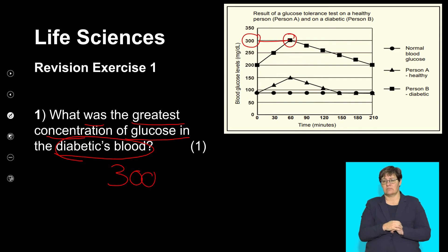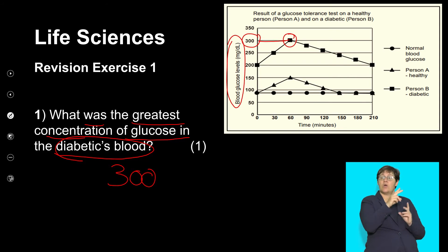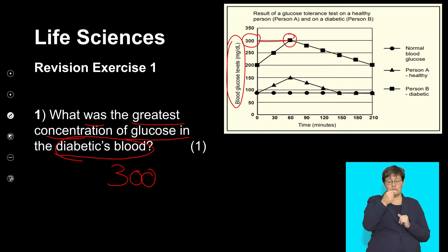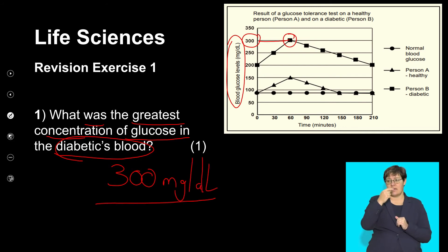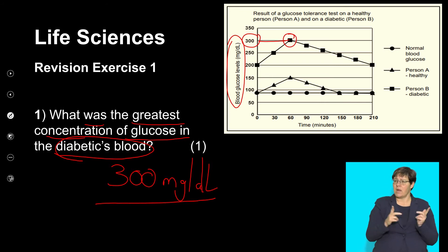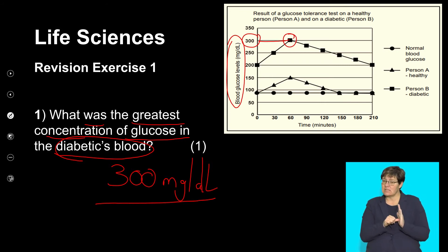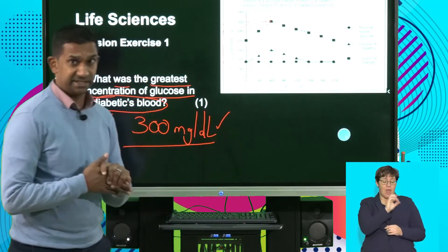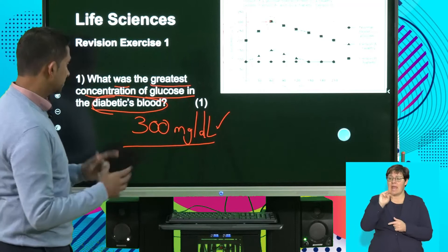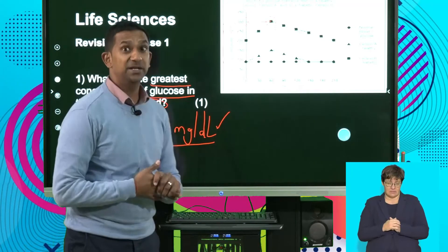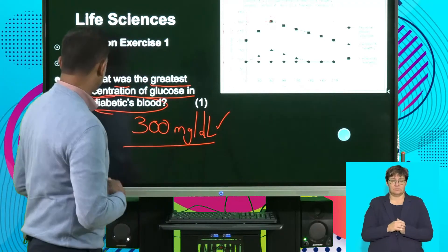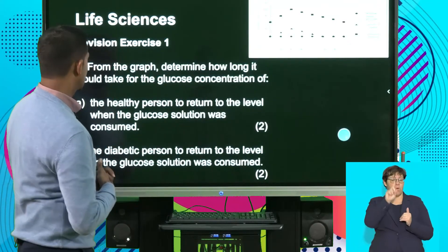The answer is not complete yet — it's important to include the unit given on the y-axis. So in this case it is 300 milligrams per deciliter. It may not make sense to you, but it's important to provide a unit for your answer — that is only when your answer can be accepted as correct. So this is a simple extrapolation of data from the graph.